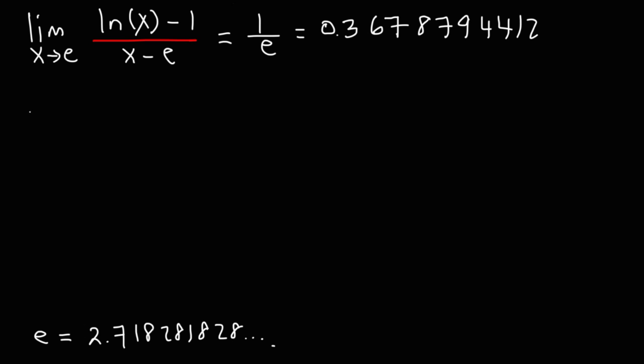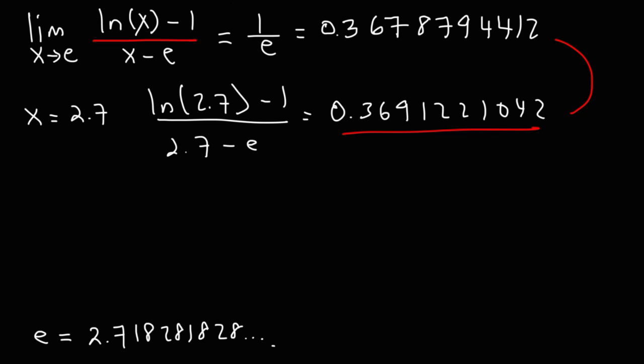So let's start with 2.7. If x is 2.7, what is the value of that expression? So ln(2.7) minus 1 divided by 2.7 minus e. If you plug this in, you should get 0.3691221042. So it's not too far away from this value.